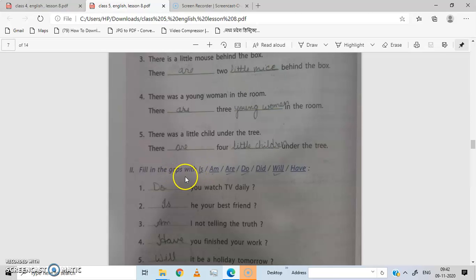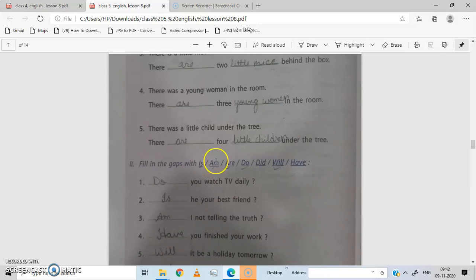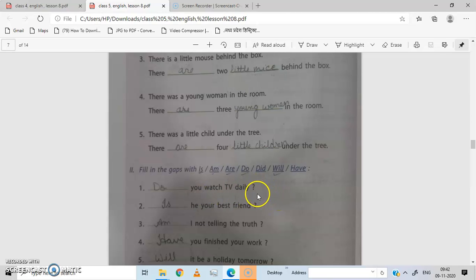Fill in the next question, fill in the gaps with is, am, are, do, did, will, have. Use these to fill in the blanks. Dash you watch TV daily? When there is a question mark, we are making questions. So not is, do you watch TV daily. Dash he your best friend? Is he your best friend? Dash I not telling the truth? With I we always use am. Am I not telling the truth?